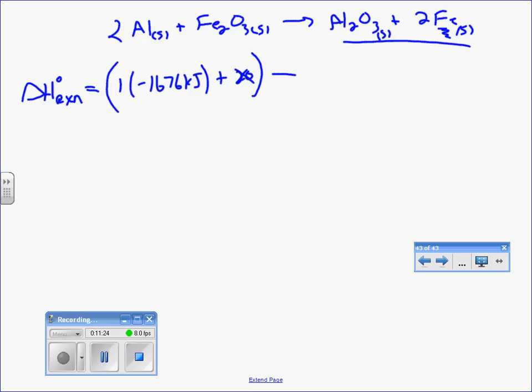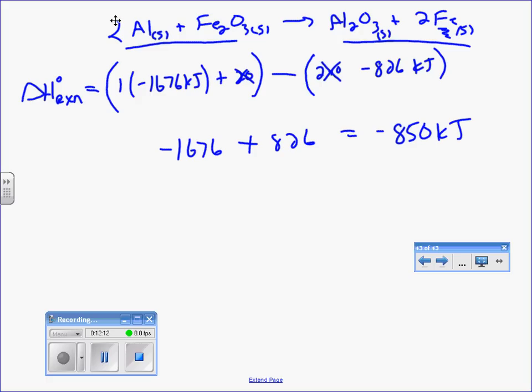Minus. So, I did the products first. Now, I'm going to subtract the reactants. So, I have 2Al. That's 0 again. So, 2 times 0 is just 0. And then now I need Fe2O3. So, I only have one of those. So, Fe2O3 is negative 826 kilojoules. And I can add these things up. So, I have negative 1676 plus 826 because I'm going to change the sign. So, negative 1676 plus 826 gives me an answer of negative 850.